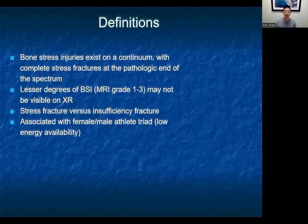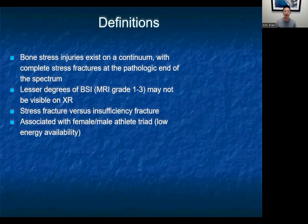The terms stress fracture and insufficiency fracture are sometimes used interchangeably. Stress fractures generally result from an abnormal load on a normal bone, whereas insufficiency fractures result from a normal load on abnormal bone, like in the case of osteoporotic fractures. Bone stress injury is the umbrella term, and a stress fracture is the pathologic endpoint of that process. There are lesser degrees of bone stress injury, generally graded only on MRI, using grading systems on a scale of one to four, with four being a complete stress fracture.